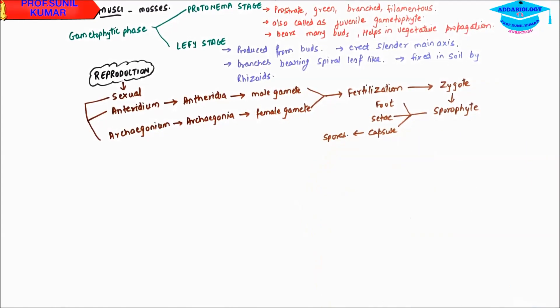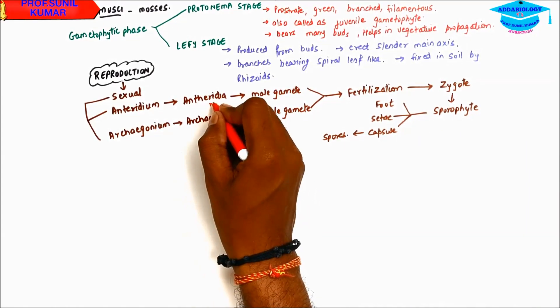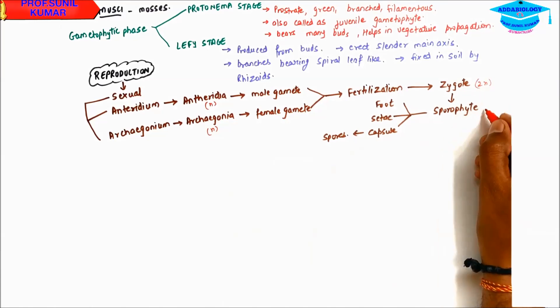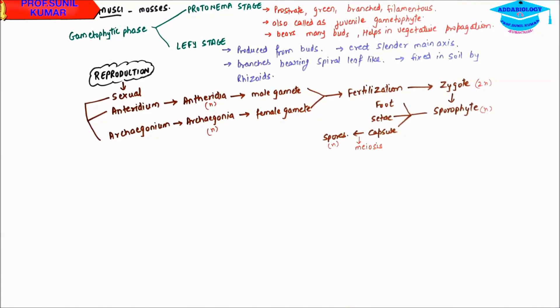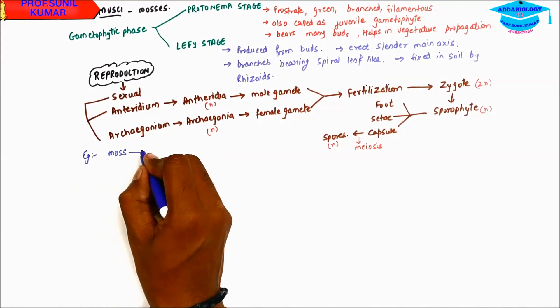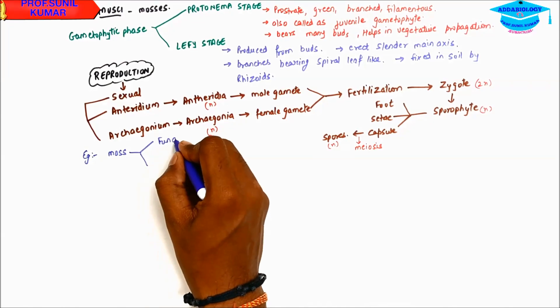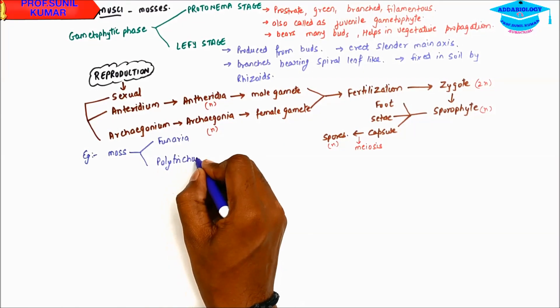We need to understand antherozoid is haploid, archegonia is haploid, zygote is diploid, and sporophyte is diploid. The capsule undergoes meiosis and produces haploid spores. When we talk about moss, it includes two examples: one is Funaria and next one is Polytrichum.